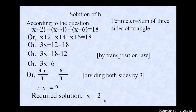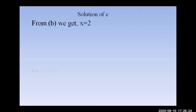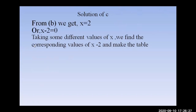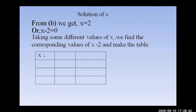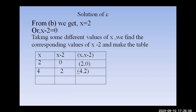Part c — graphical solution. From part b, x equals 2, so we write x minus 2 equals 0. Take different values of x and find corresponding values of x minus 2 in one table. Take x equals 2: 2 minus 2 equals 0, so (2, 0). Take x equals 4: 4 minus 2 equals 2, so (4, 2). Take x equals minus 2: minus 2 minus 2 equals minus 4, so (minus 2, minus 4).